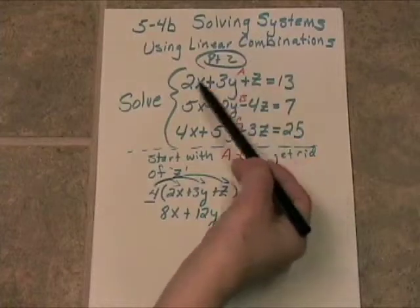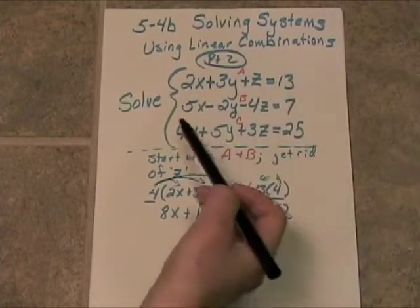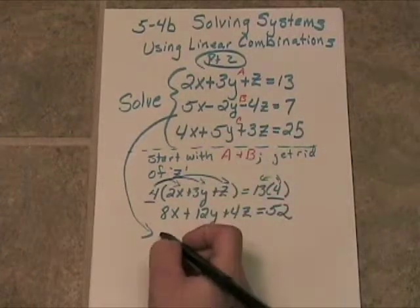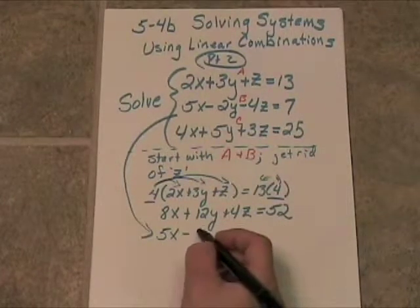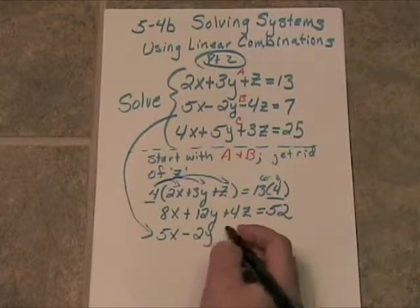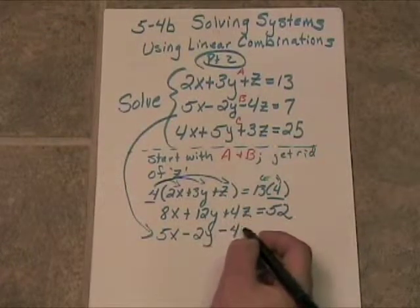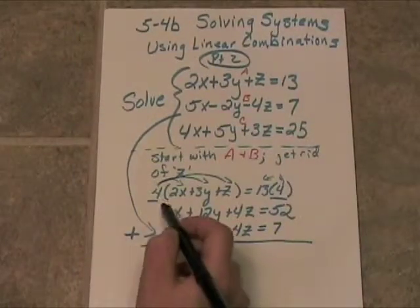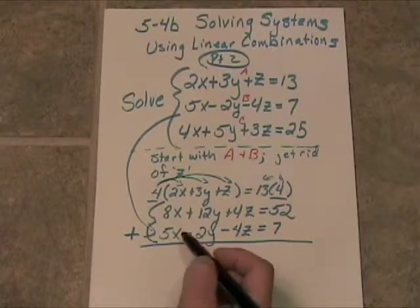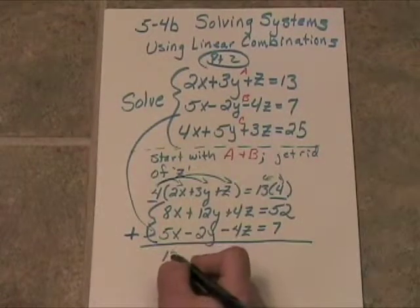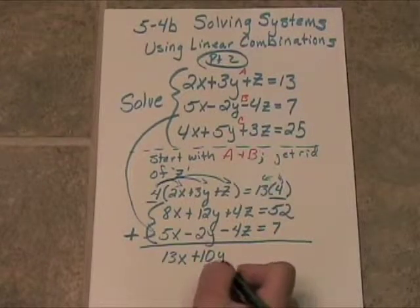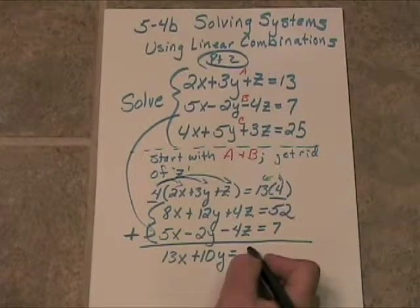So now we have a new Equation A. Now, directly underneath that, we're going to put Equation B. Again, the purpose is to get the z to algebraically remove. So if I now add this new set of equations here, I will get 13x plus 10y is equal to 59.